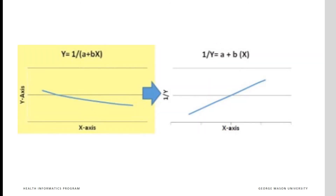If the dependent variable is a function of 1 divided by a linear function of the independent variables, then 1 divided by y is linearly related to the independent variable. The left-hand side shows the relationship between y and x before transformation — it is not linear. The right-hand side shows the same relationship between the inverse of y and x. Now it is linear.